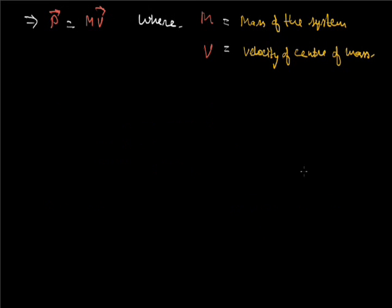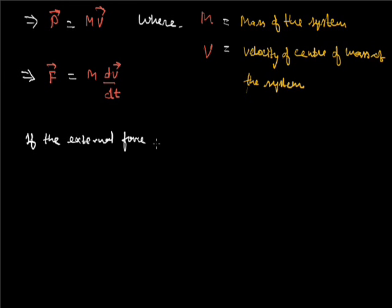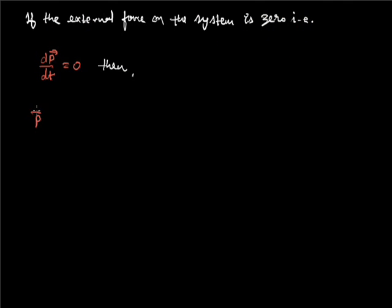Since the rate of change of momentum is given by the force on the system, if the external force on the system is zero — meaning dp/dt equals zero — then the momentum of the system is conserved and remains constant. In the absence of external force, the total linear momentum of the system is conserved, meaning the velocity of the center of mass remains constant with the passage of time.